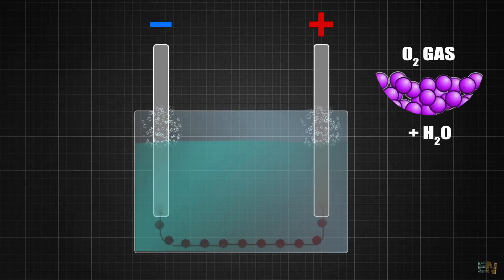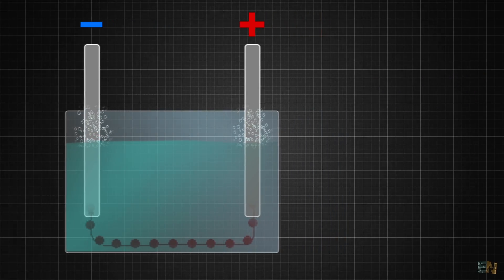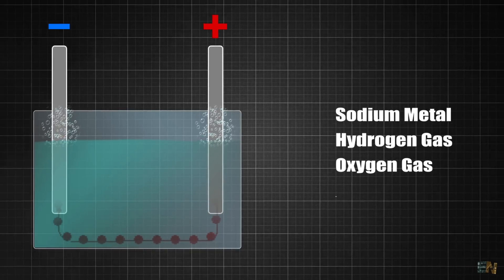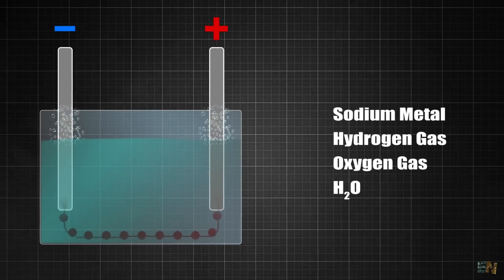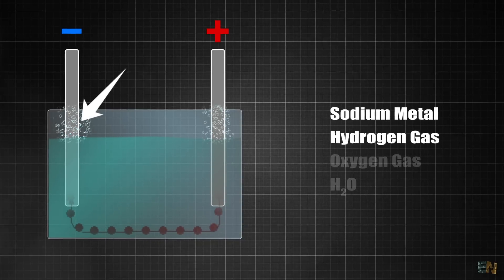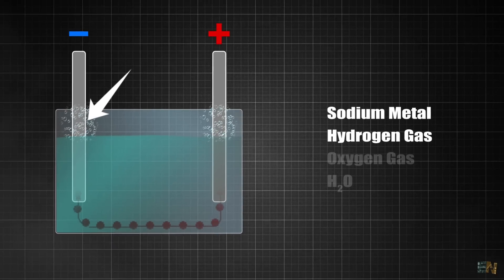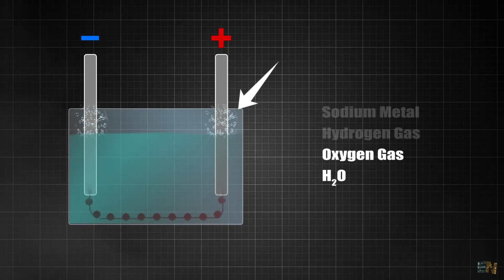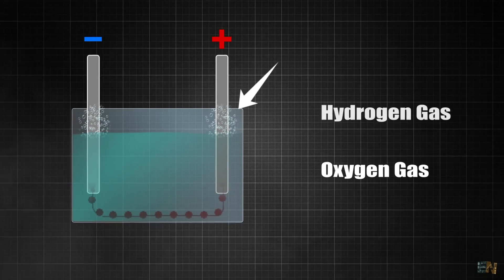So overall, the electrolysis of sodium hydroxide in water produces sodium metal, hydrogen gas, oxygen gas and water. The sodium metal and the hydrogen gas are produced at the cathode, while the oxygen gas and water are produced at the anode. So that's how we can get hydrogen and oxygen.